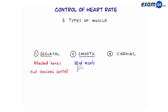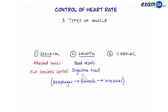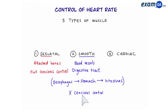Next we have smooth muscle. Smooth muscle is found in some organs such as blood vessels or in your digestive tract, starting from the esophagus, going to the stomach and all the way to the small and large intestine. We do not have any conscious control over these muscles. Try it yourself — see if you can make your stomach contract or make your blood vessels flex. We don't have any conscious control over them.